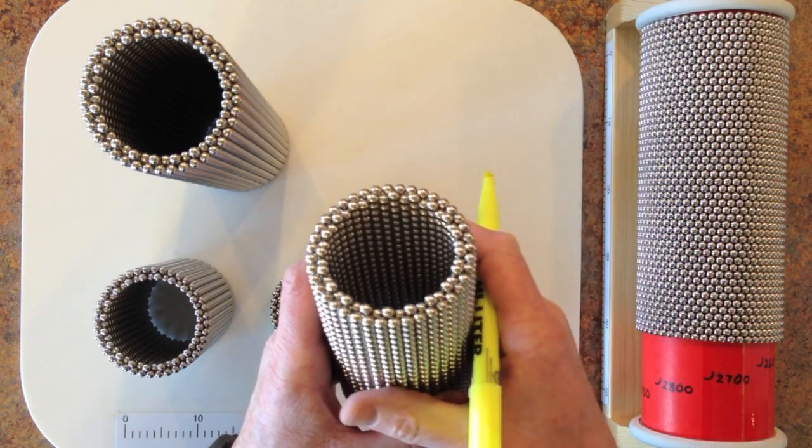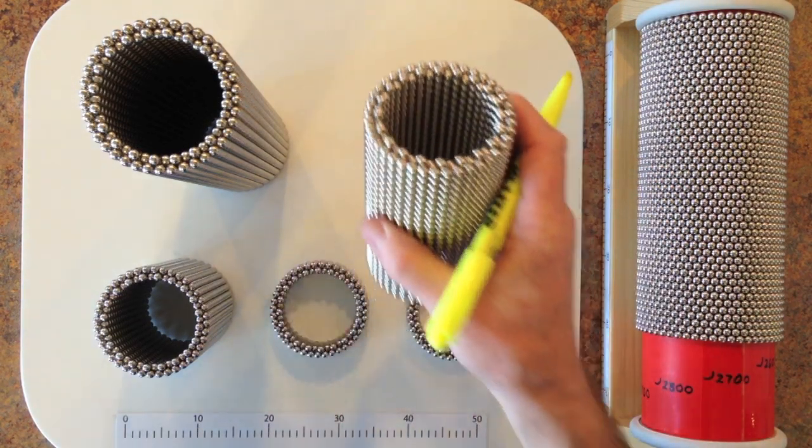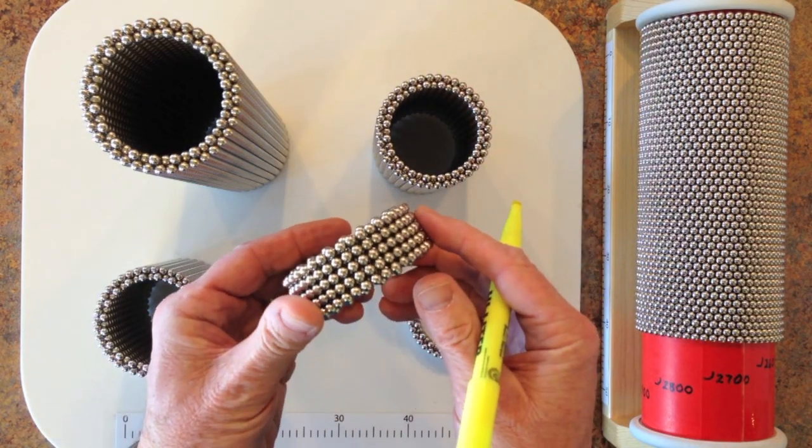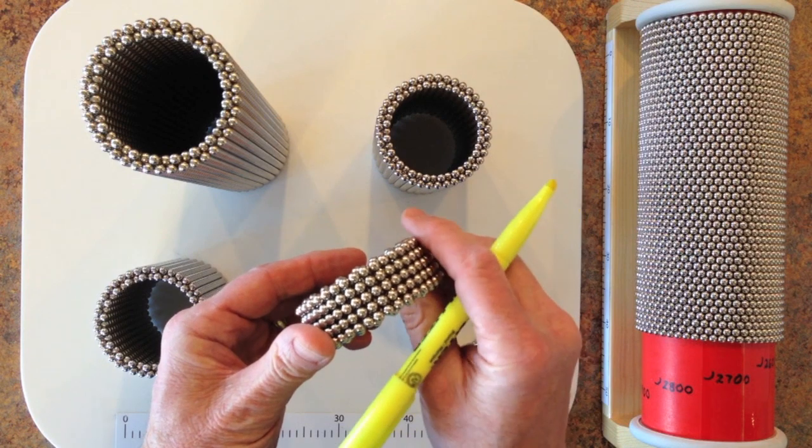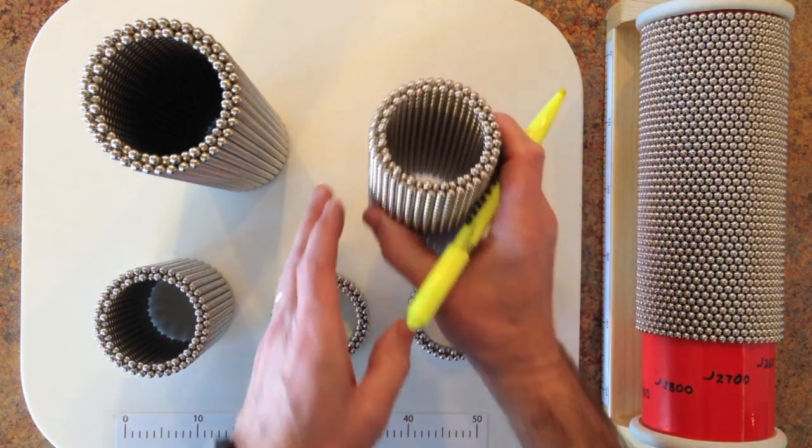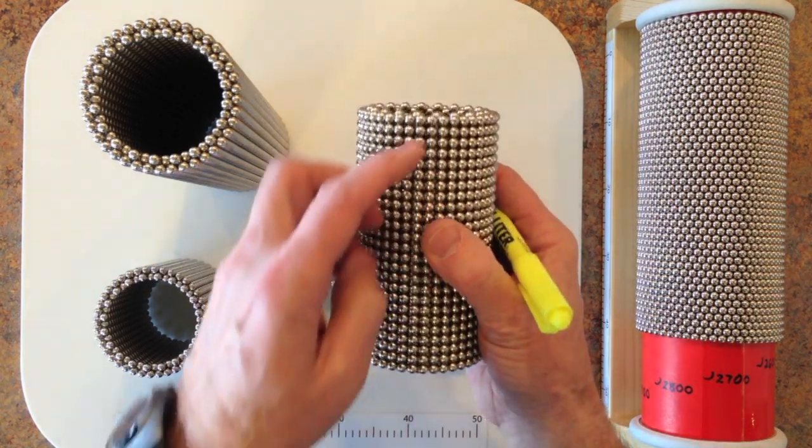Up, down, up, down, etc. In this video, I will build this 5 ring tube with 400 magnets.